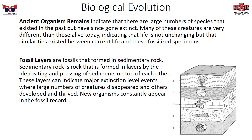Ancient organism remains indicate that large numbers of species existed in the past but have since gone extinct. Many of these creatures are very different from those alive today, indicating that life is not unchanging, but that similarities existed between current life and these fossilized specimens. Additionally, fossil layers show that fossils are formed in sedimentary rock, which is formed in layers by depositing and pressing sediments on top of each other. These layers can indicate major extinction-level events where large numbers of creatures disappeared and others developed and thrived. New organisms constantly appear in the fossil record, and as you go further down, you are reaching older levels.